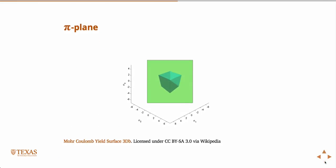So this is just the same picture, but now we're looking down the hydrostat — we're looking at the end of the cone. Remember I said it was like a hexahedral shape? That's it. And this is called the pi plane — the plane where sigma 1 equals sigma 2 equals sigma 3.